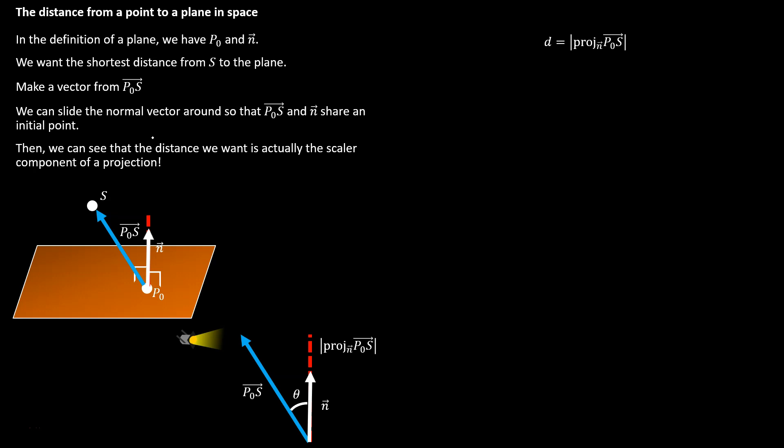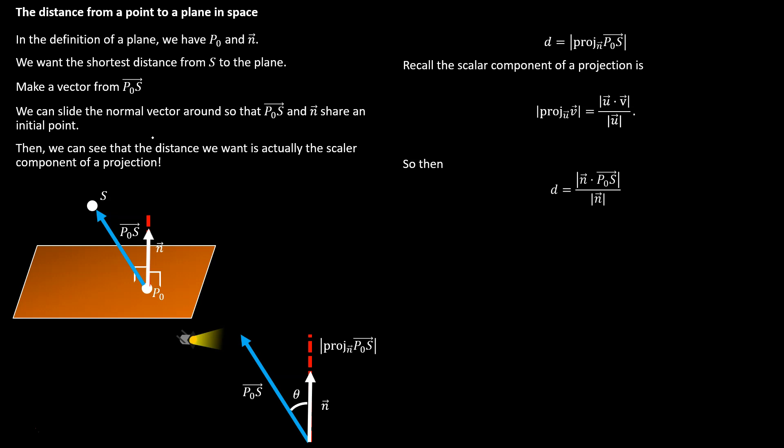The distance is the projection of the p0-to-s vector onto the normal vector from the plane, and we're just taking the magnitude of that projection. The scalar component of a projection can be calculated using the absolute value of the dot product in the numerator and the magnitude of the vector you're projecting onto in the denominator. So for our vectors, instead of u dot v, we'll have p0s dotted with n, and instead of the magnitude of u in the denominator, we'll have the magnitude of n.